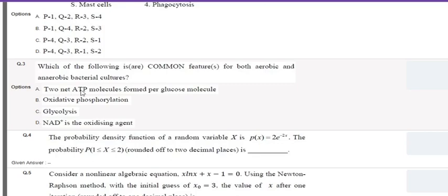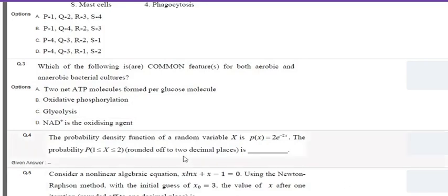The first option — two ATP molecules formed per glucose molecule — is wrong. Aerobic respiration produces 38 ATP molecules per glucose, while anaerobic produces only two net ATP. Oxidative phosphorylation is also wrong because it is a feature of aerobic respiration only, which includes glycolysis, the Krebs cycle, and oxidative phosphorylation. The correct options are glycolysis — a common feature of both aerobic and anaerobic bacteria — and NAD+ acting as an oxidizing agent, an electron acceptor molecule.